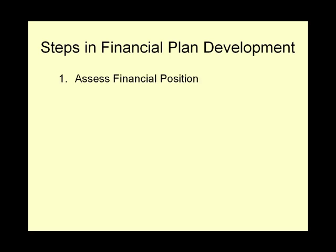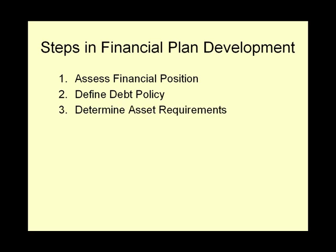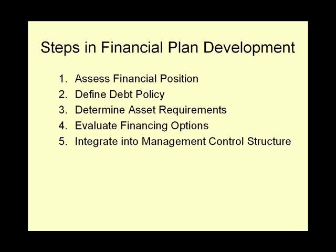The steps in the financial planning process are: assessment of the financial position of the firm currently, definition of optimal debt policy, determination of asset requirements going forward to support the business strategy, evaluation of options for financing those asset requirements, and finally, integration of the information developed in the financial plan into the management control structure of the firm. The first step is to assess the firm's present financial position, in order to develop an understanding of how the firm has performed in the past and therefore what it might or might not be able to achieve in the future.